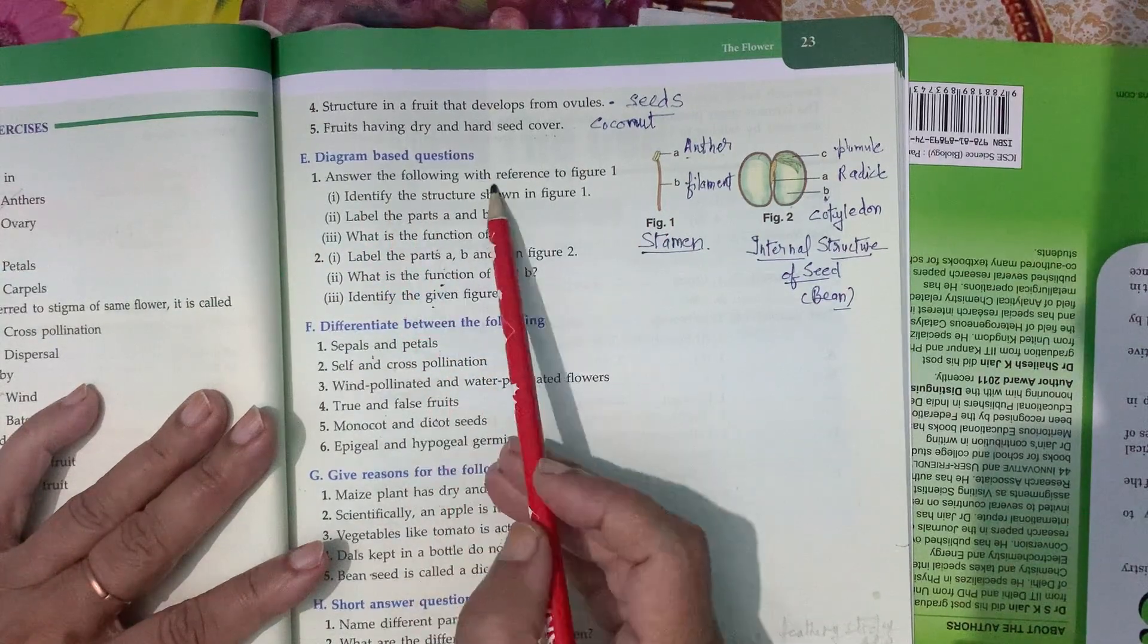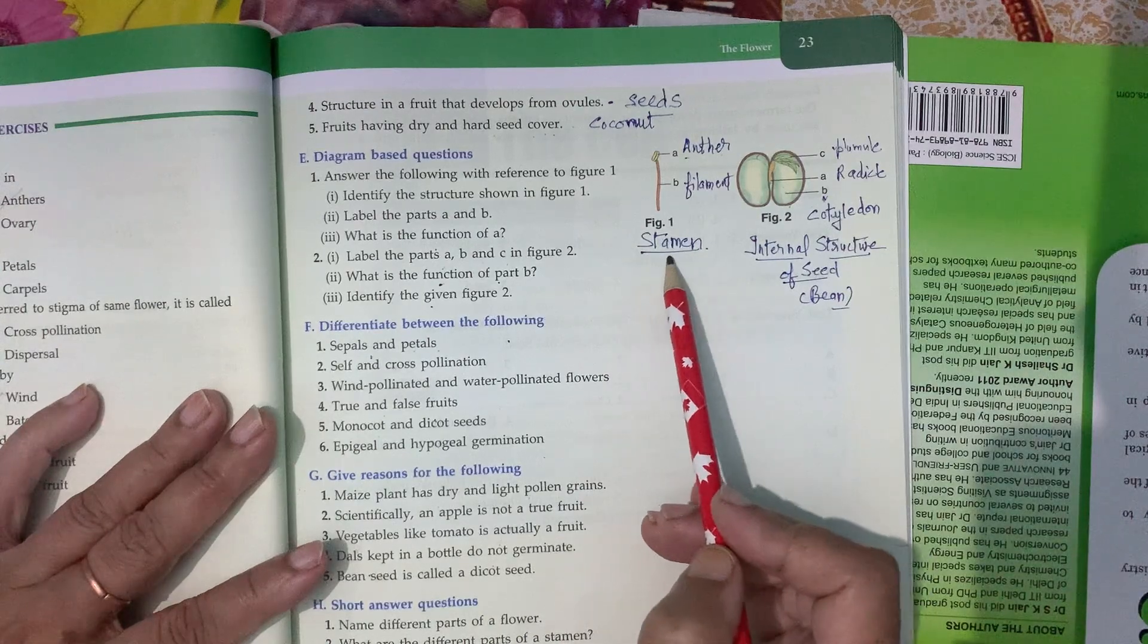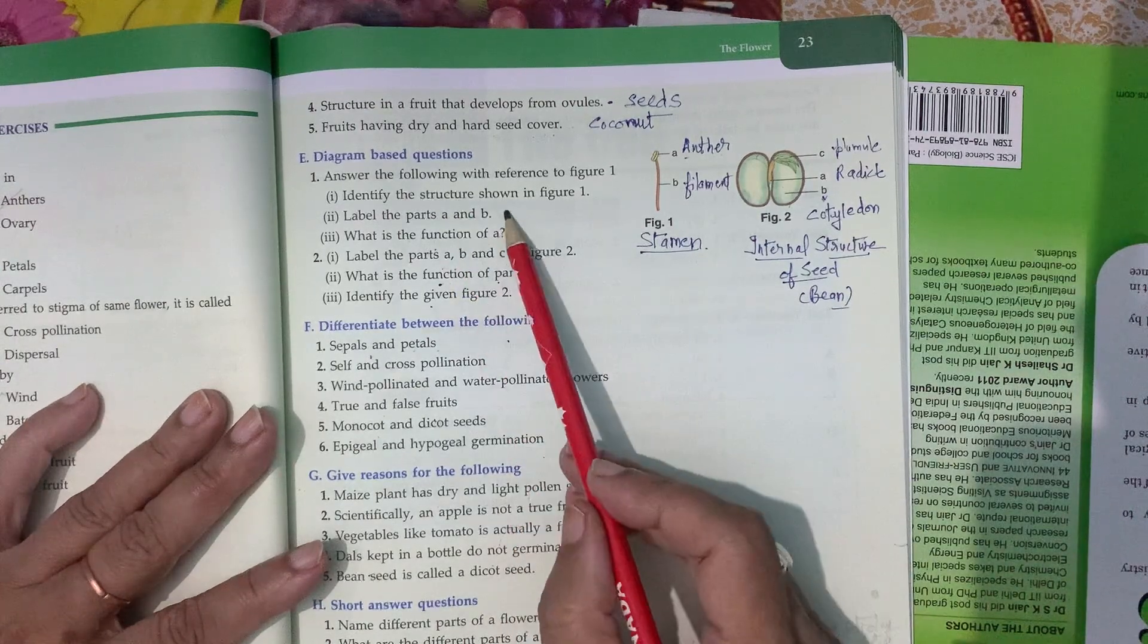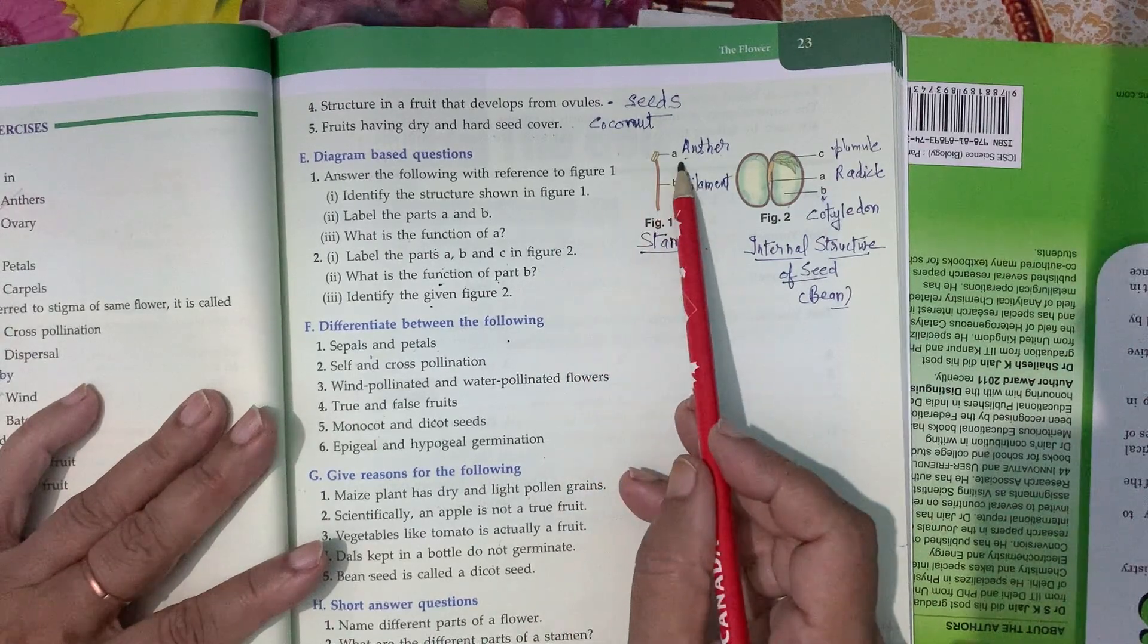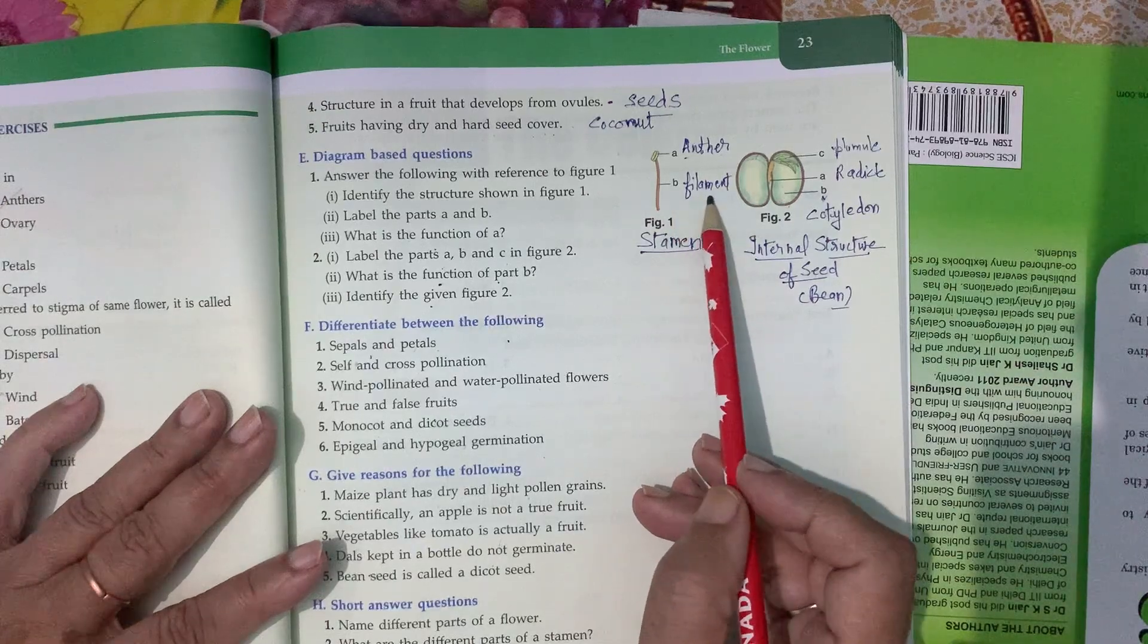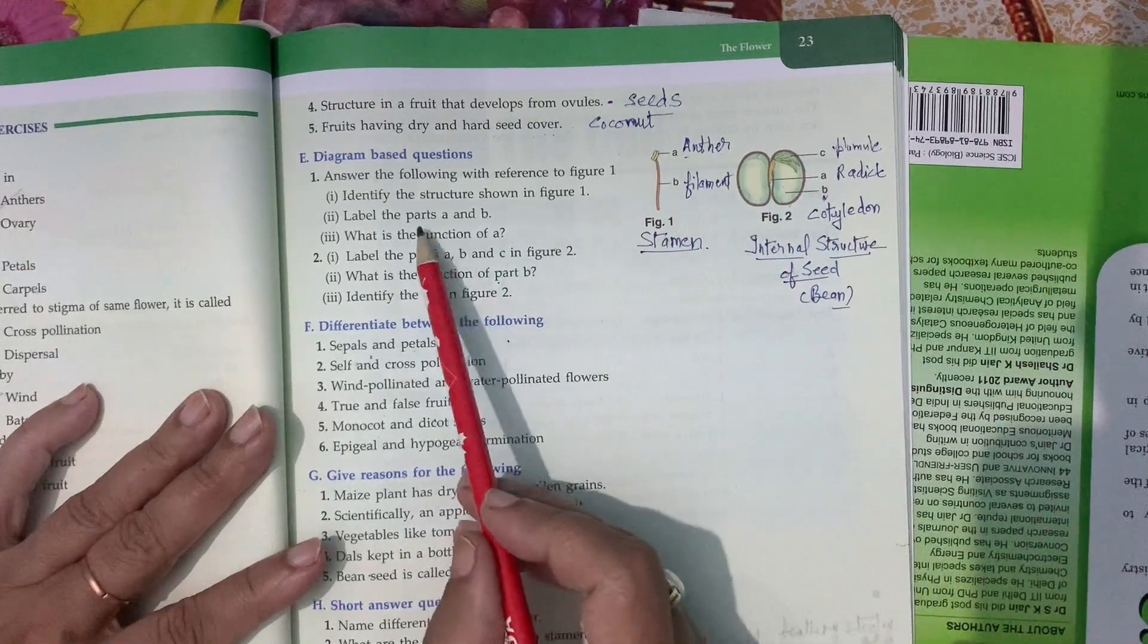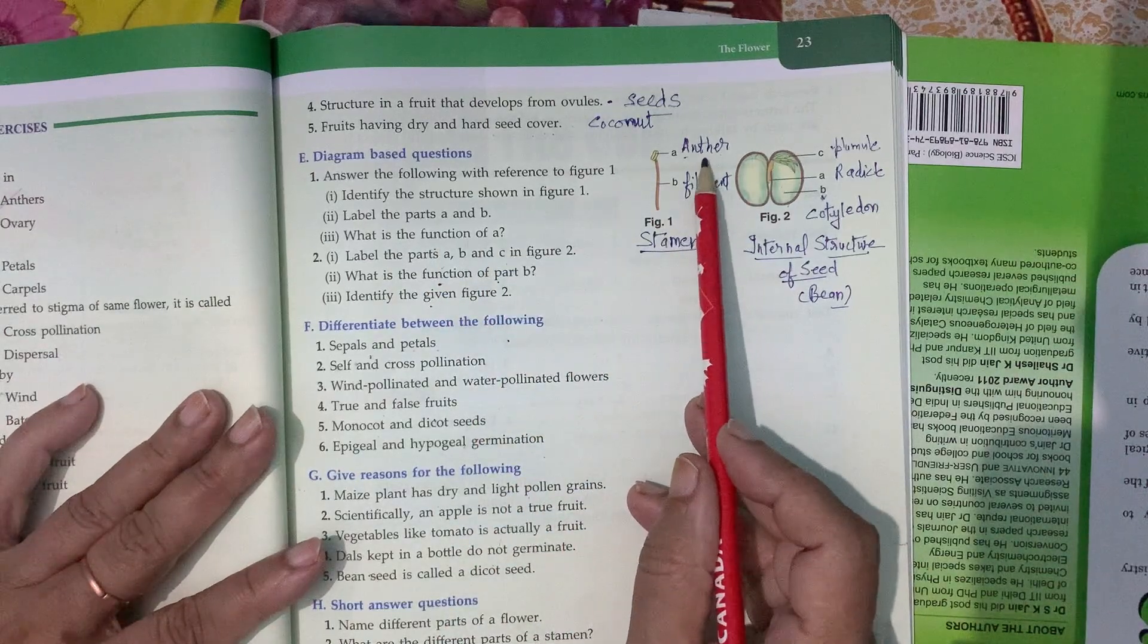Diagram-based question. Answer the following with reference to figure one, stamen. Identify the structure shown in figure one. A is anther, B is filament. What is the function of A, anther? Formation of pollen grains.